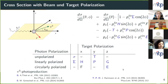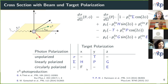We have a polarized beam and can polarize our target, giving access to eight polarization observables. For most of these observables we have already taken data. For π⁰ photoproduction we have published all of these data sets. I will show some highlights of the published data for different final states in the next slides.